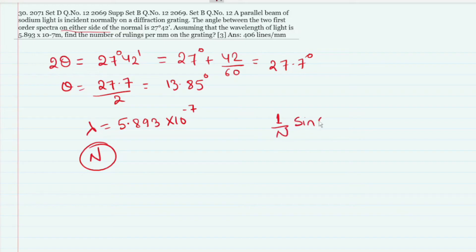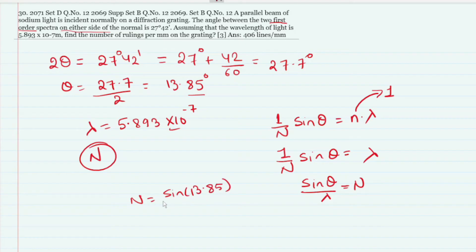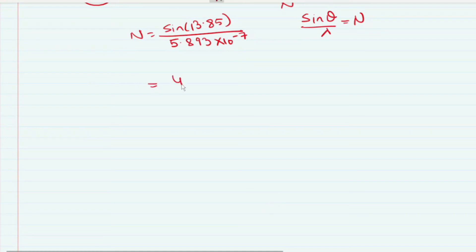The wavelength of sodium light is 5.893 × 10⁻⁷ meters. We want to find the number of rulings per mm. The formula is (1/N) sin θ = n λ. For first order, n = 1, so N = sin θ / λ = sin(13.85°) / (5.893×10⁻⁷), giving N ≈ 0.2395 / (5.893×10⁻⁷).